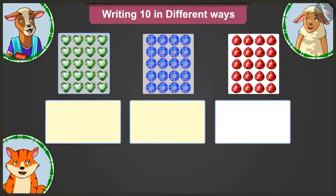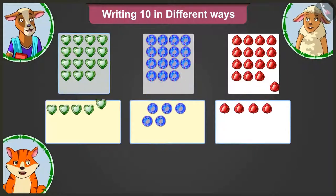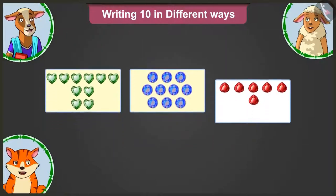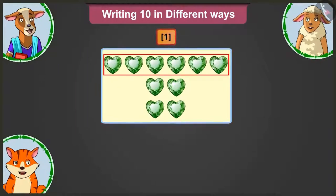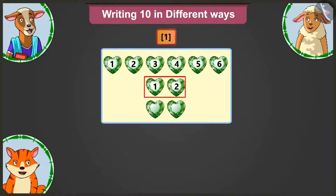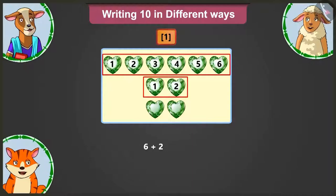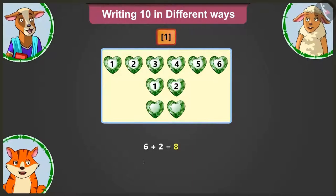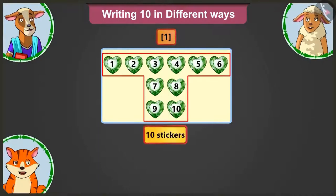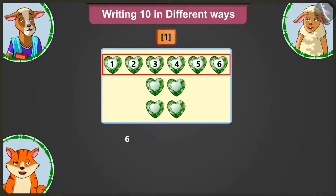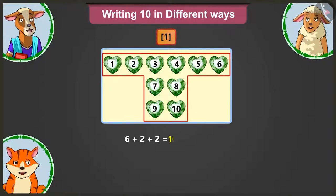Look, I have some stickers. I will stick these stickers on cards in three different ways. Now, I have three cards with stickers. Look, here in the first card, there are six in the first row, two in the second row and two stickers in the third row. So, adding two to six, we get eight, and adding two to eight, we get ten. This card has ten stickers in total. We will write the sum of ten like this: six plus two plus two equals ten stickers.